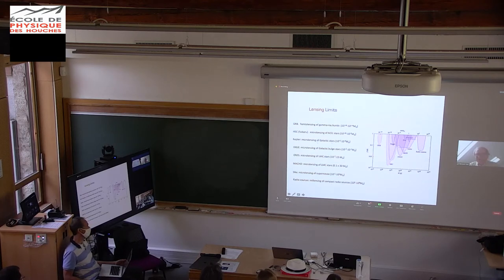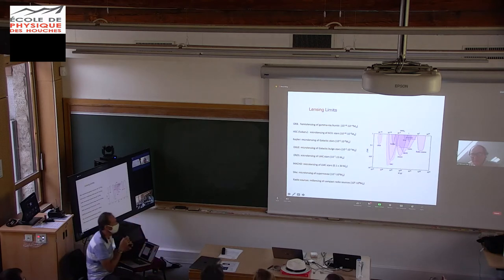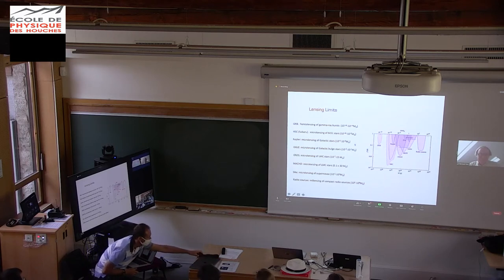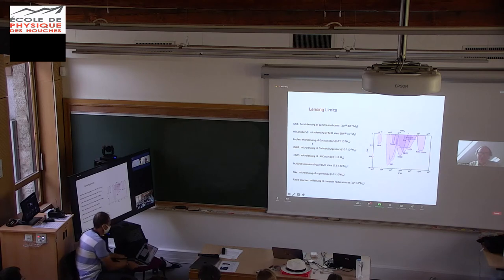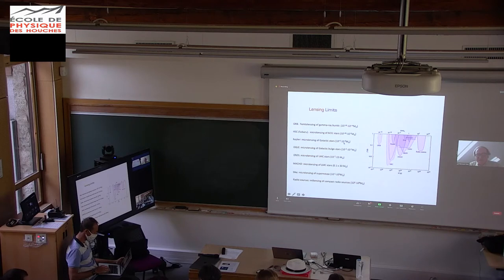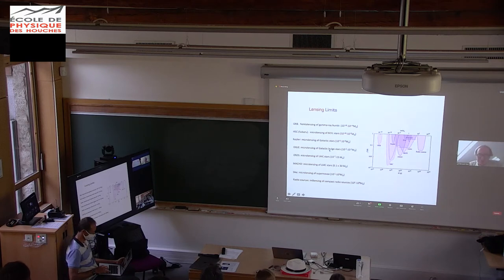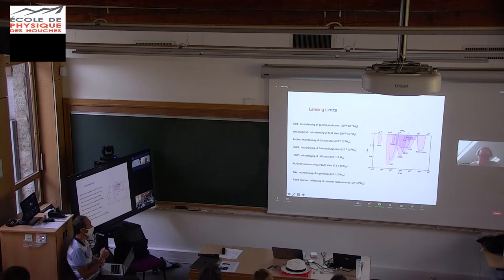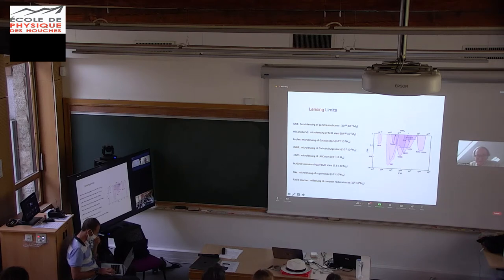Kepler, originally looking for planets, enables microlensing searches for stars in the galaxy, constraining masses in the range 10⁻⁹ to 10⁻³ solar masses. OGLE, a Polish microlensing search looking at stars in the galactic bulge, puts limits in the range 10⁻³ to 10⁻¹ solar masses. The old EROS French microlensing experiment from the 90s looked at stars in the LMC and SMC — a precise limit going from about 10⁻⁷ to 15 solar masses. MACHO, the equivalent project, covered a somewhat narrower range of 0.1 to 30 solar masses.